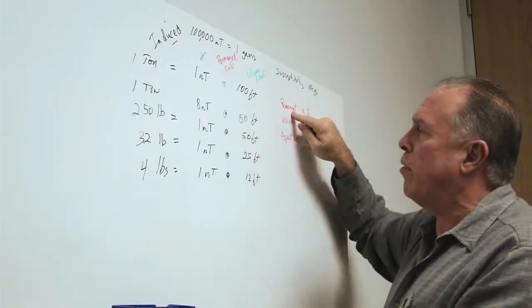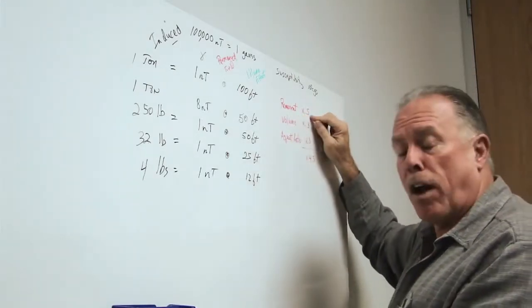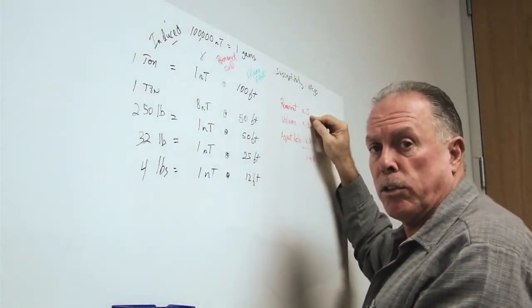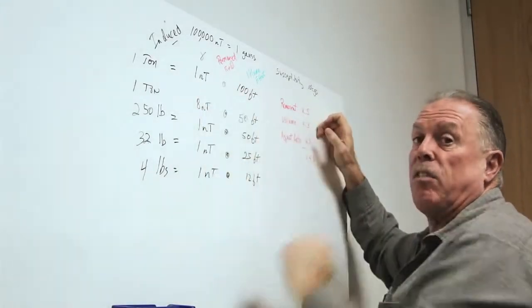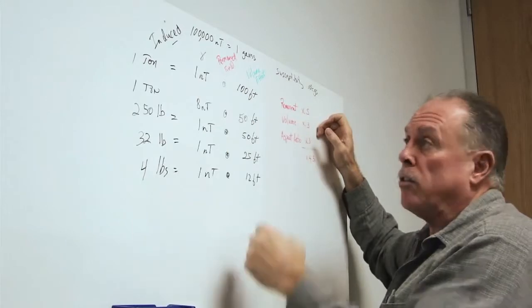The induced fields give us approximately 1 nano Tesla of Earth's distortion at 100 feet for 1 ton. We learned that remnant fields can give us as much as a 5 times increase in field distortion, meaning that instead of seeing 1 nano Tesla at 100 feet, we might see 5 nano Tesla.